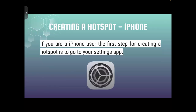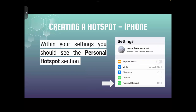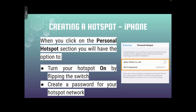If you are an iPhone user, the first step for creating a hotspot is to go to your Settings app. Within Settings, you should see the Personal Hotspot section. If it doesn't show up, you can search for it in the search bar at the top. Once you click on Personal Hotspot, you will have the option to turn your hotspot on by flipping the switch — it will turn green once it's on.